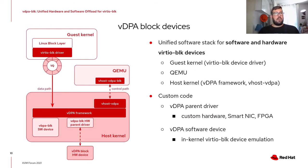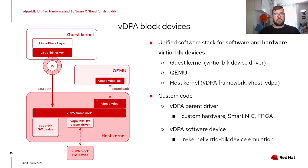Based on the VDPA framework, we can develop a unified software stack to support both software and hardware VirtIO block devices. Guests don't need any changes since the exported interface is fully compliant with the VirtIO block specification. The QEMU code and the VDPA framework code in the host kernel can be reused for both software and hardware devices. The custom code needed is a small VDPA parent driver for each hardware device — such as custom hardware from a vendor, SmartNICs, or FPGAs — used only for the control path. For the software device, we need to implement the device emulator in the host kernel.